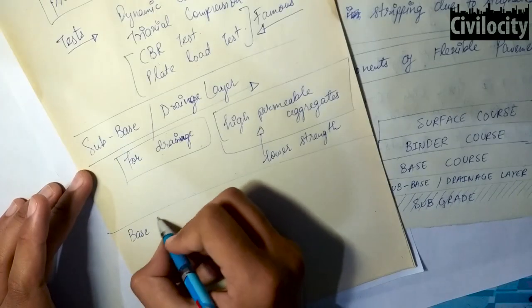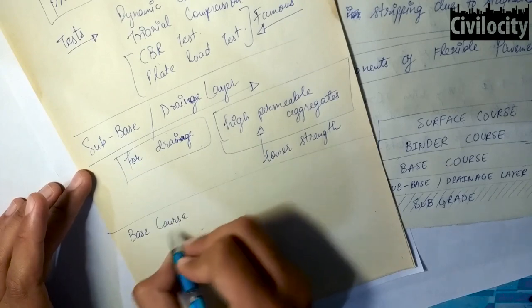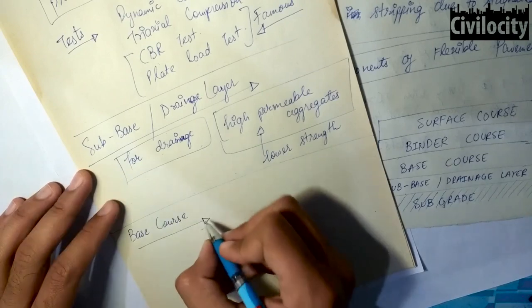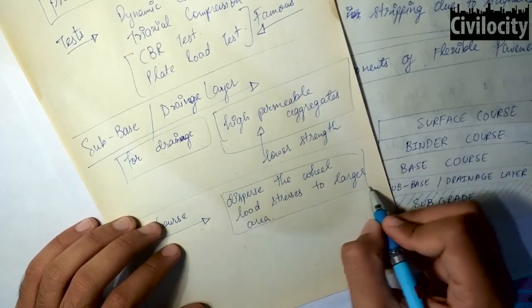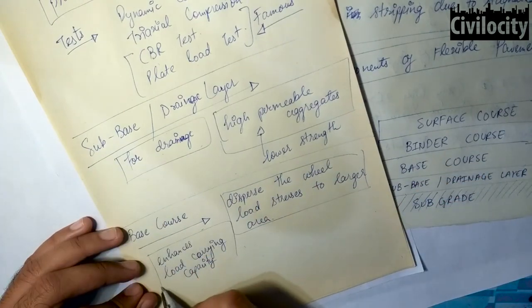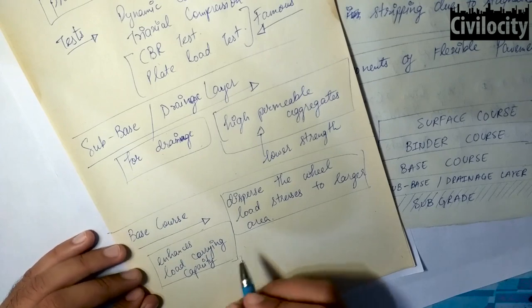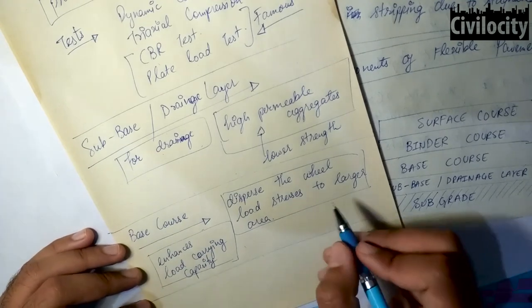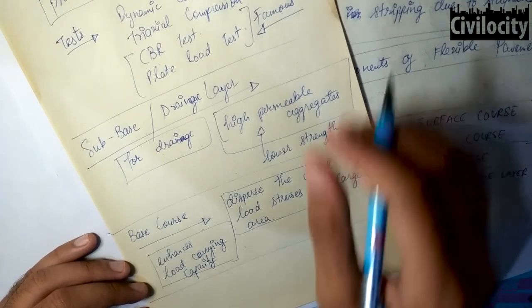Okay, then our next layer is the base course, which is the third layer from the bottom, and it is basically designed to disperse the wheel load stresses to a larger area. High quality aggregates are used in this layer. It enhances the load carrying capacity of flexible pavement.